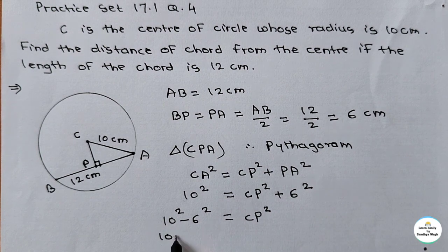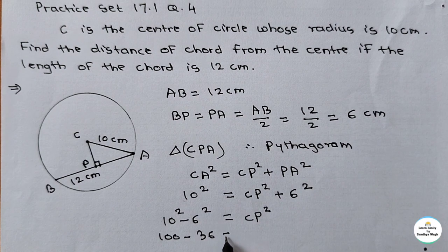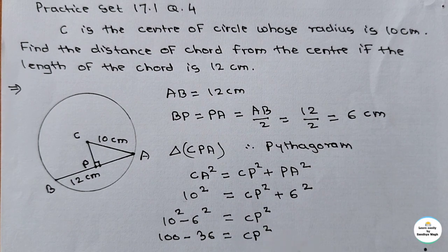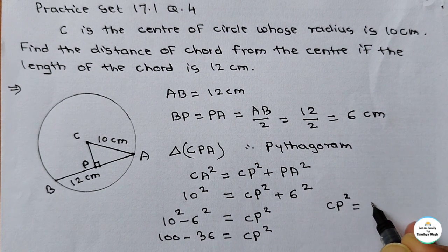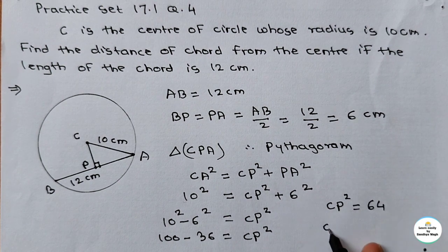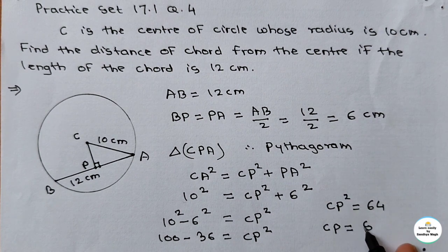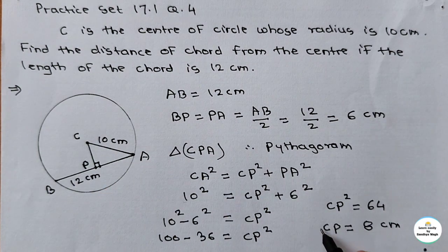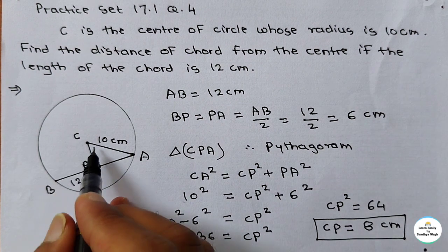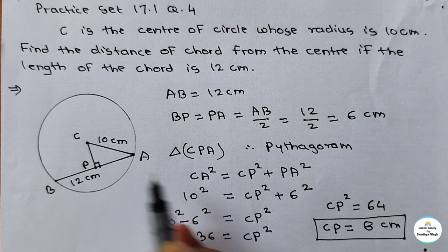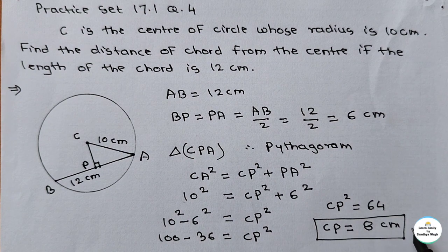So 10² = 100, 6² = 36. CP² = 100 − 36 = 64. Taking the square root of both sides, we get CP = 8 cm. This is the minimum distance of the chord from the centre. So CP is equal to 8 centimetre.